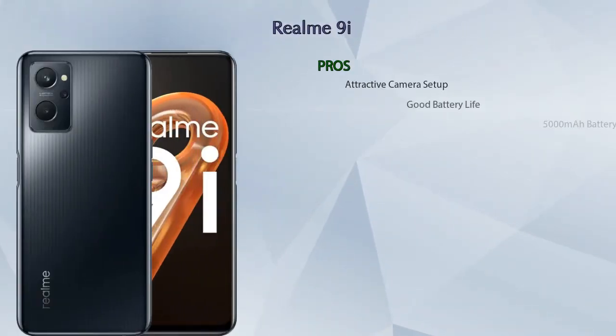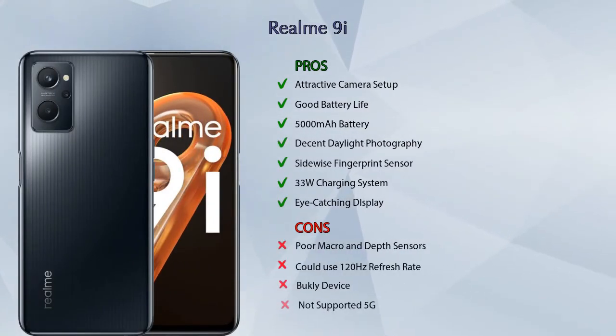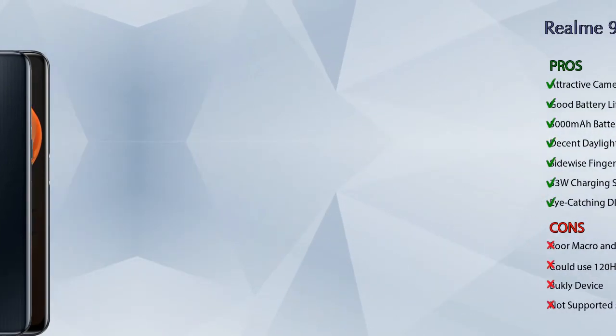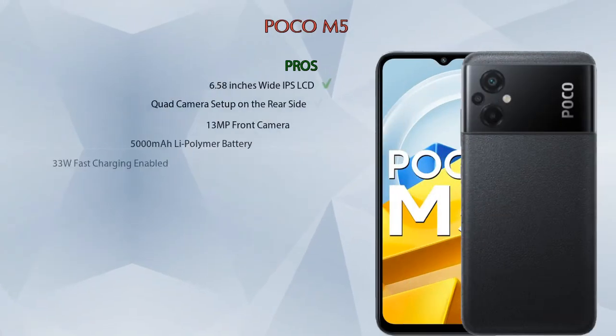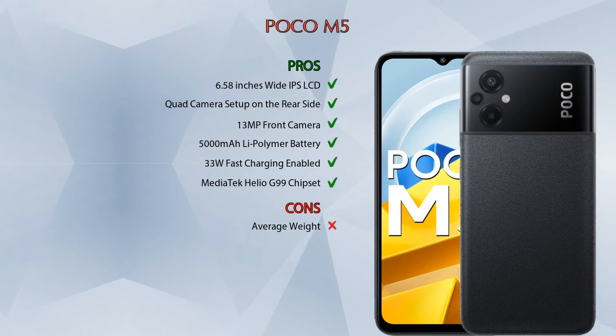Friends, now let's talk about pros and cons. Realme 9i has 7 pros and 4 cons. Poco M5 has 6 pros and 1 con.